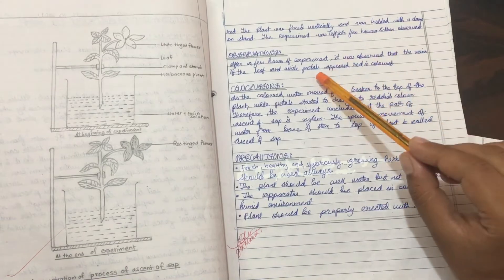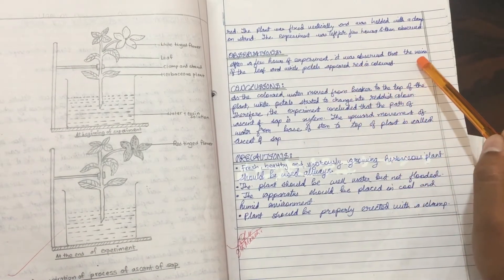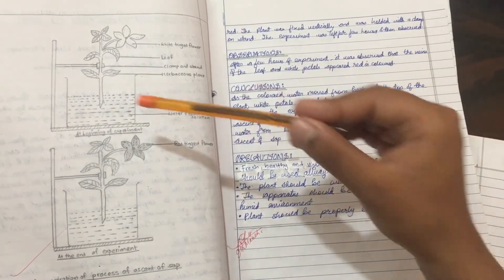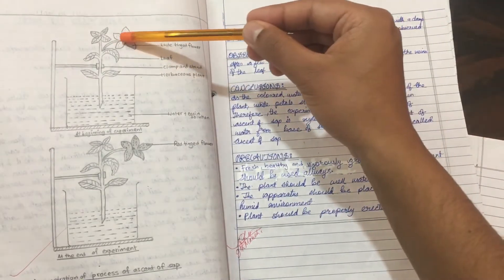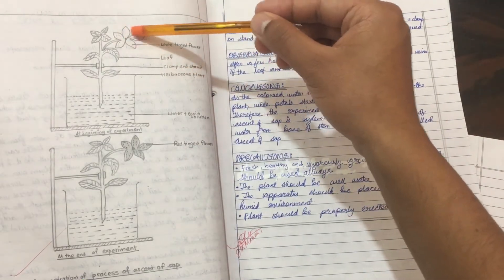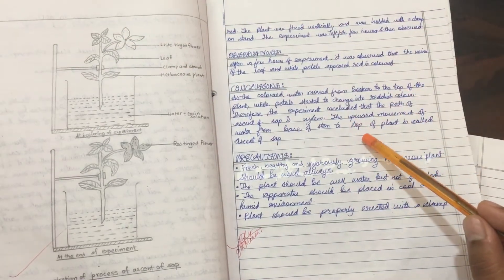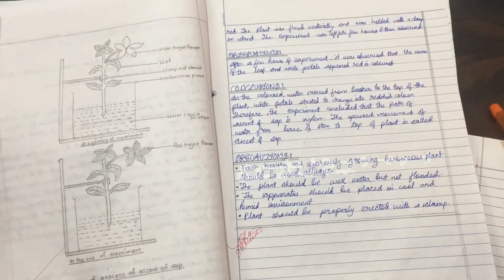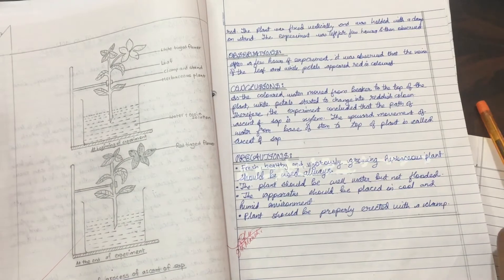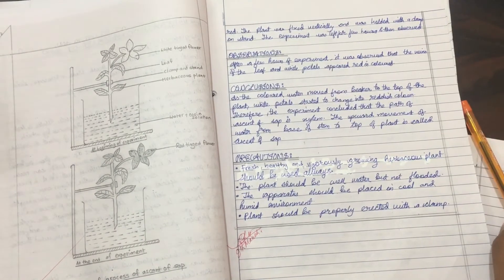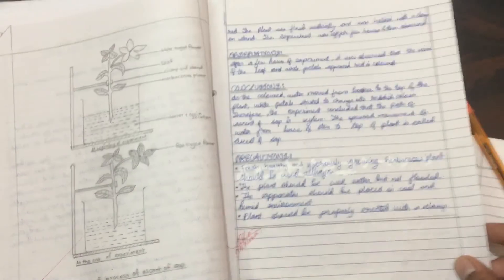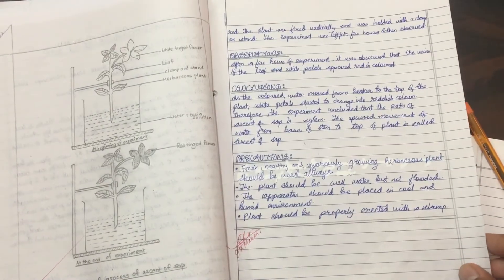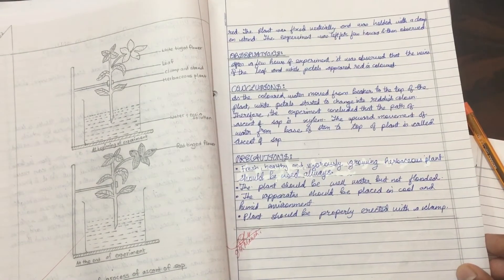Ultimately, what happens is that the veins of the leaf are colored in white petals, which are turned red. And in conclusion, the leaf is colored, and the path of ascent of sap is through the xylem.